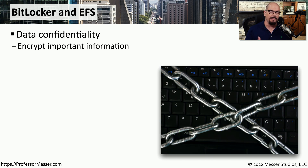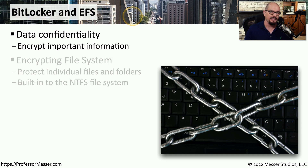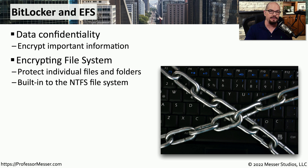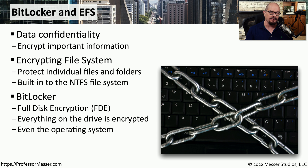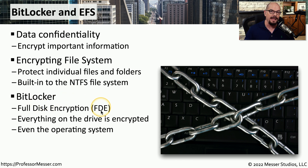We often work with sensitive information, and it might make sense to encrypt that data to keep it away from prying eyes. In Windows, you can provide encryption using BitLocker and EFS. EFS, the Encrypting File System, allows you to choose individual files or folders to be encrypted — everything else remains unencrypted, but anything selected with EFS will only be accessible if you've properly authenticated. BitLocker extends this concept to full disk encryption, or FDE, encrypting everything on a storage drive including all files and the operating system. If someone gains access to your computer but cannot authenticate, they will have no access to any data on that drive.